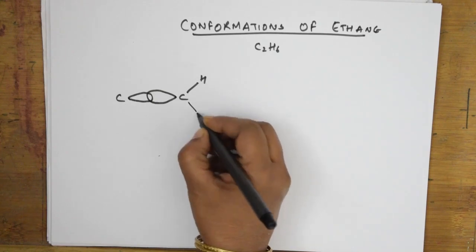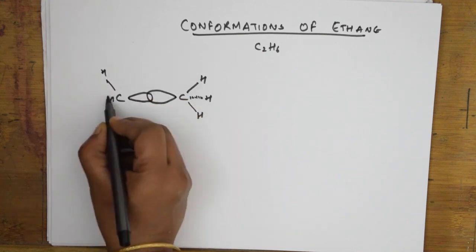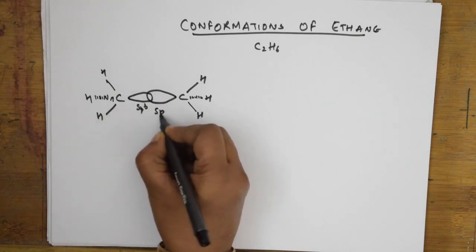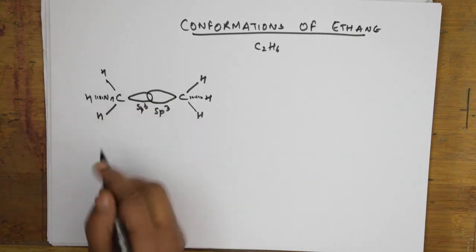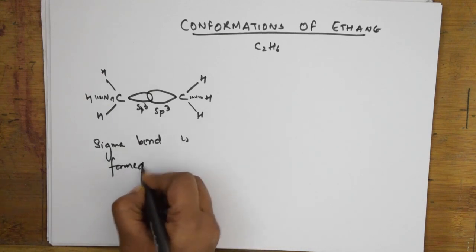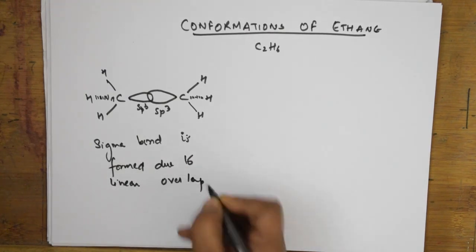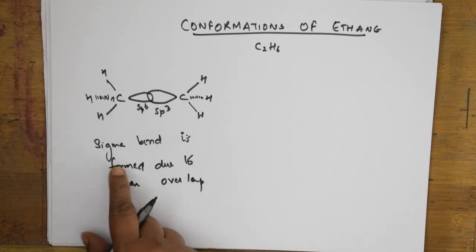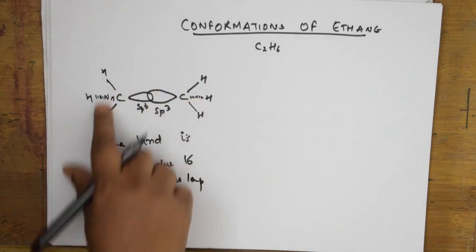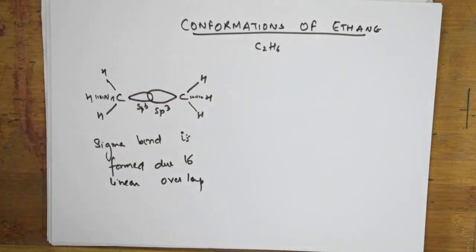Even when the molecule is rotated, the sigma bond overlap is maintained. Now, considering the rotation concept: in the ball and stick model of ethane, one carbon atom is kept stationary and the other is rotated. This rotation demonstrates infinite possible conformations, among which two extreme cases are important: the eclipsed form and the staggered form of confirmation.